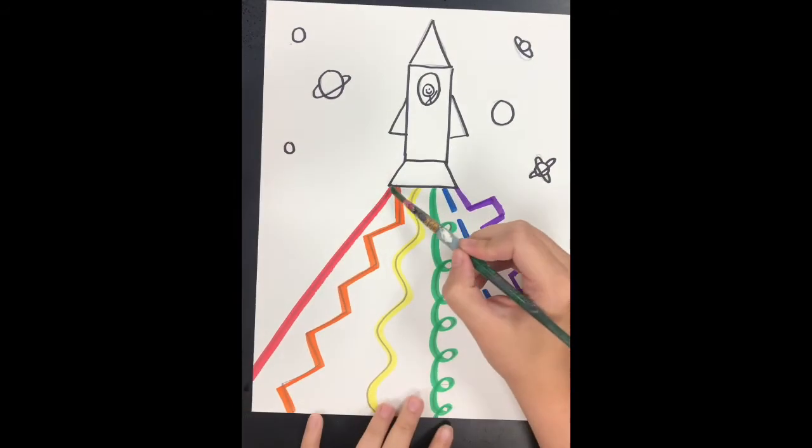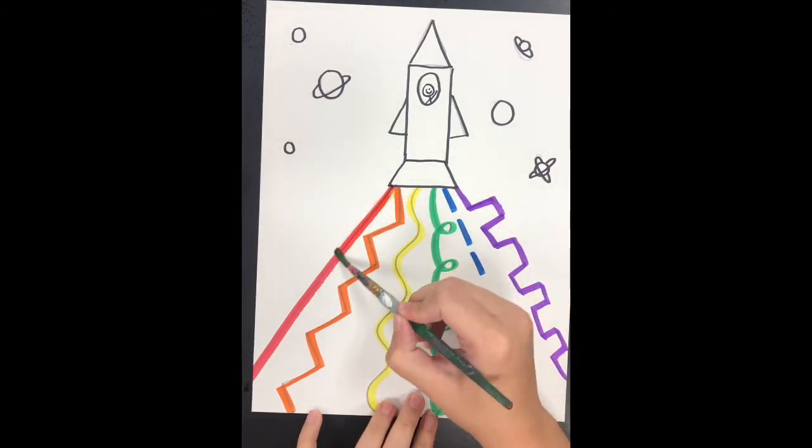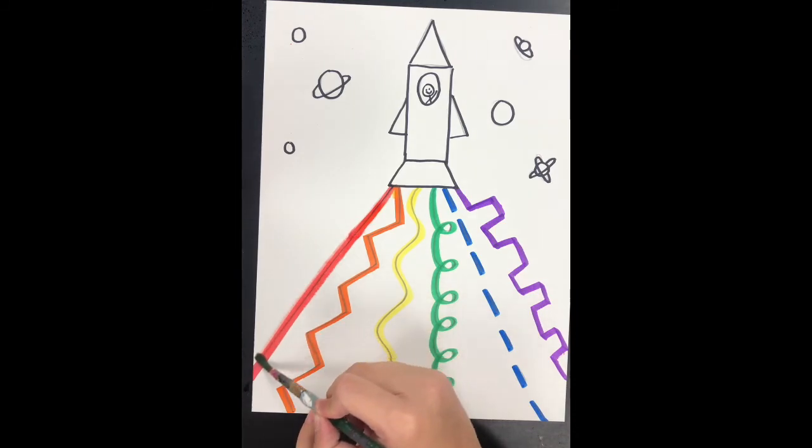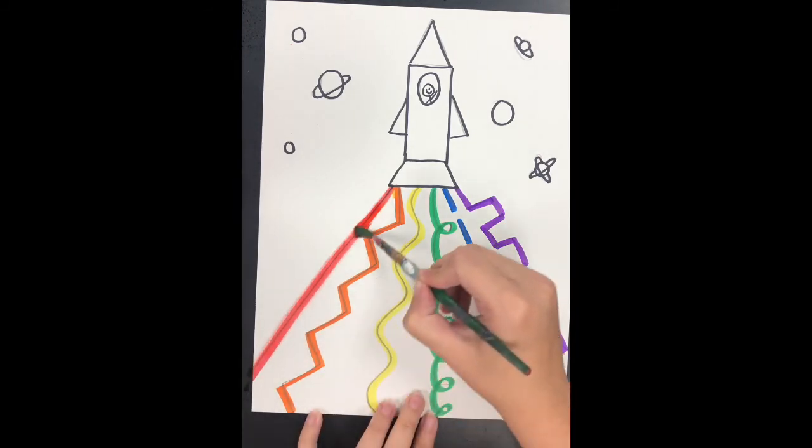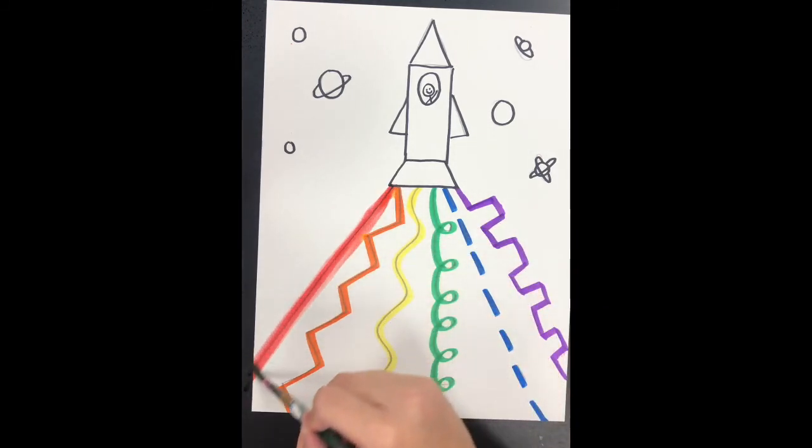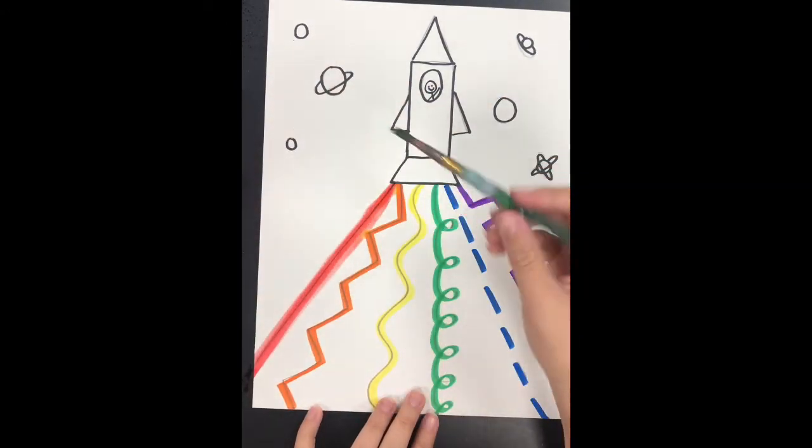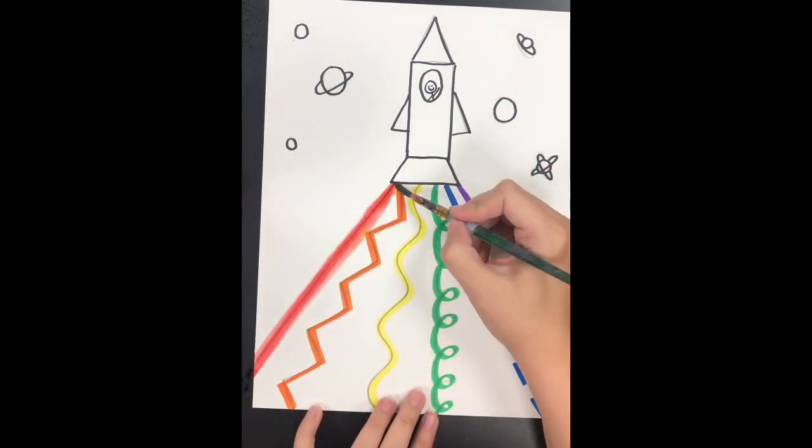I'm going to get my water, and I'm going to go very slowly. I'm just going over my rainbow lines. So I'm going tightrope walking with my paintbrush, just going on top of my red line. Next comes orange.